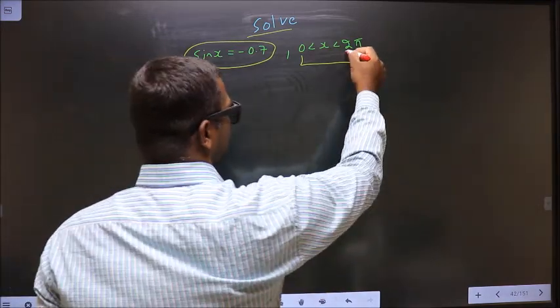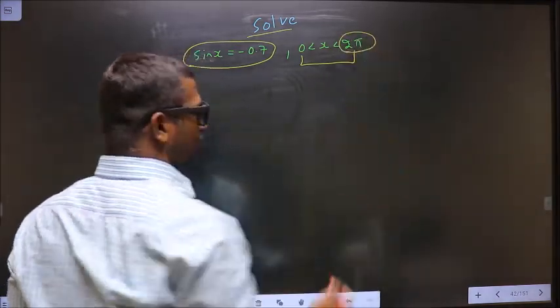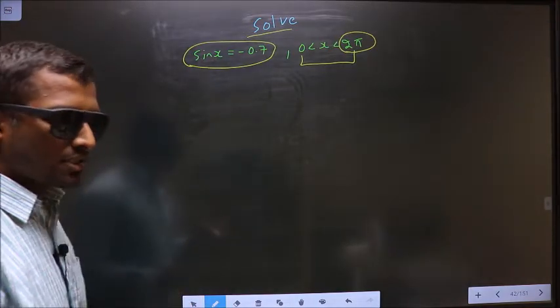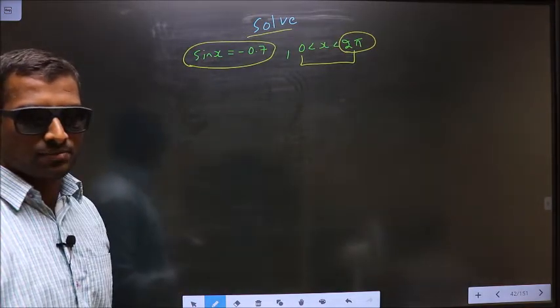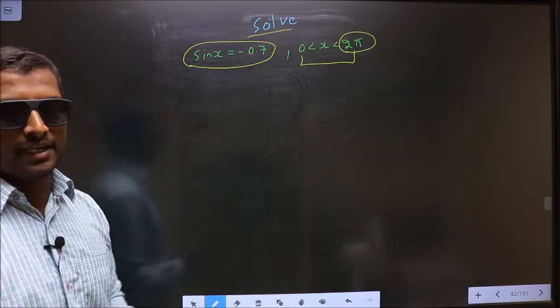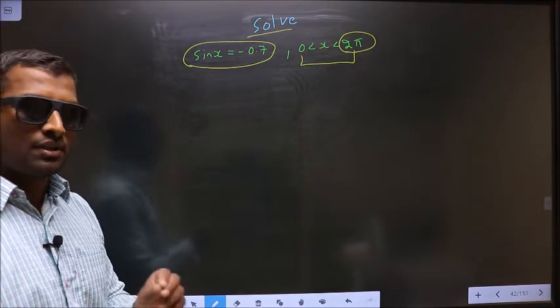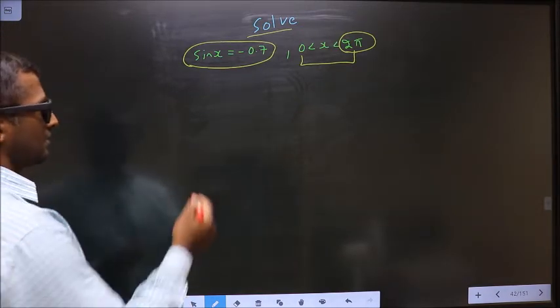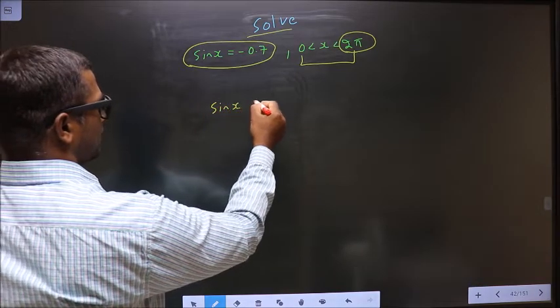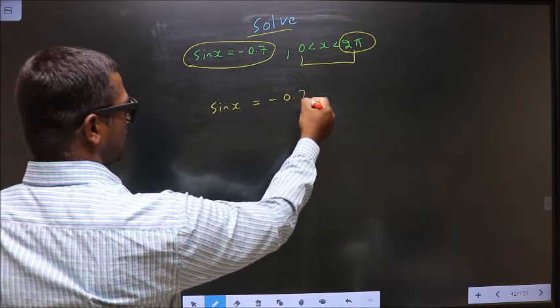Here the catch is you have 2π, so your answer should be in radians. Put your calculator in radians mode. Now given equation is sin x equal to minus 0.7.